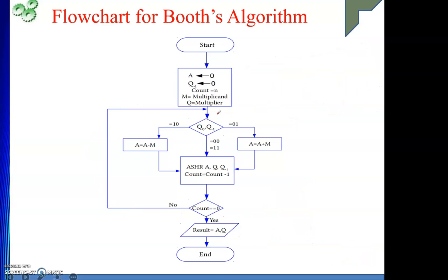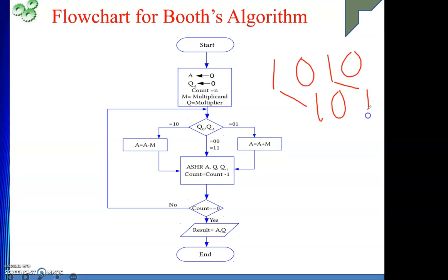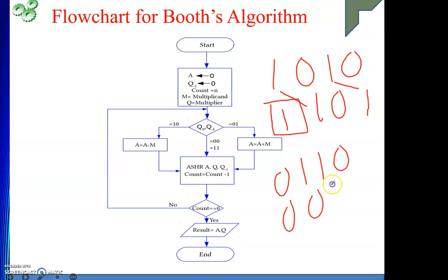Let me clarify what ASHR is. Suppose a combination is 1 0 1 0. If we perform ASHR, the sign bit 1 is copied and each bit shifts right: it becomes 1 1 0 1. For another combination 0 1 1 0, ASHR gives 0 0 1 1. Now we are ready to see an example.